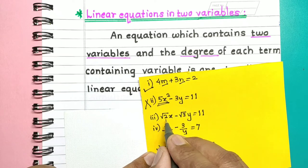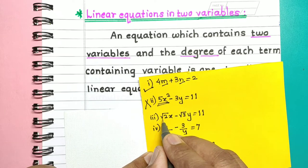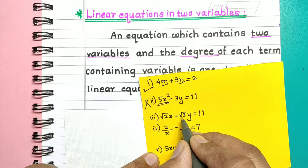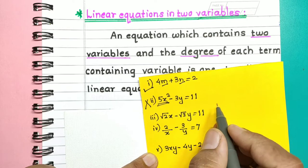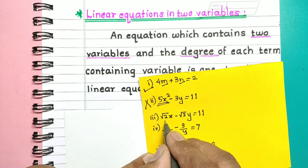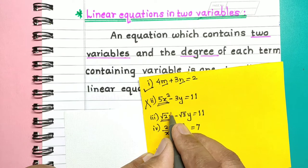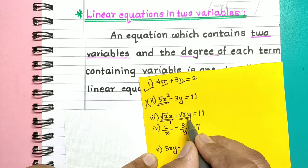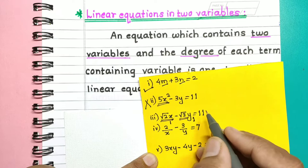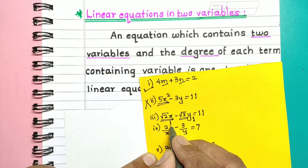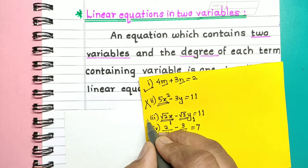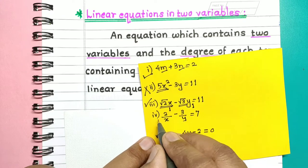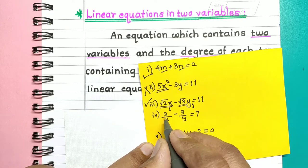Next example: root 2x minus root 3y is equal to 11. The degree of the term containing x is 1 and the degree of the term containing y is also 1. So this is a linear equation in two variables.